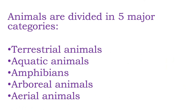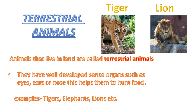Today I'm going to tell you about animal groups. Animals are divided into five major categories: terrestrial animals, aquatic animals, amphibians, arboreal animals, and aerial animals.